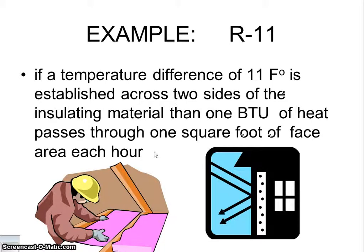What if you wanted to double your R-value to R22? That means your temperature difference would be 22 Fahrenheit degrees for 1 BTU of heat to pass through 1 square foot each hour. The thickness required would double — so for R22 with glass fiber you'd need at least 6.5 inches, and 6 inches of rock wool.